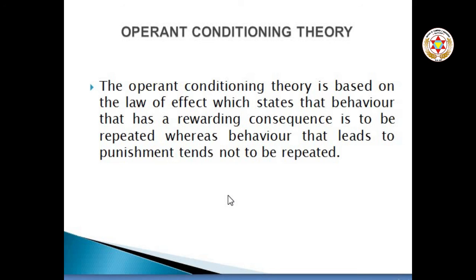To sum up, we could say that human behavior is a function of its consequences. People learn to behave so that they may get something they want or avoid something that they do not want. So this was the operant conditioning theory of learning.